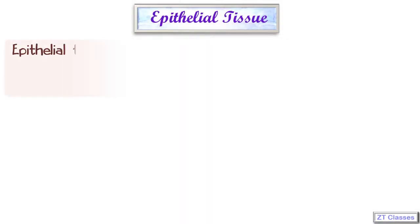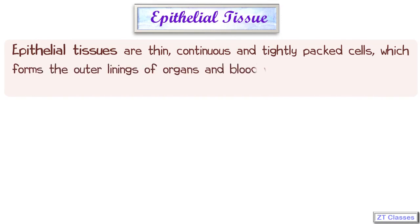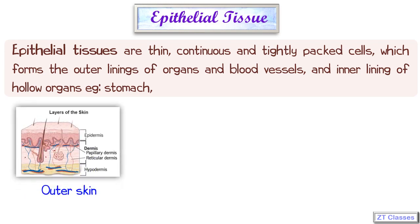The first question is: what are epithelial tissues? Epithelial tissues are thin, continuous or tightly packed layers of cells which you will find on top of organs, in blood vessels and capillaries, covering internal hollow organs like the stomach, and also on skin. The outer skin is made up of three layers — the top layer, epidermis, is epithelial tissue.